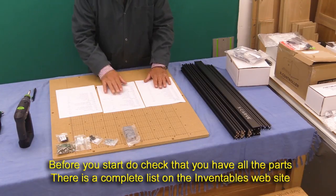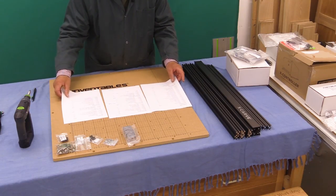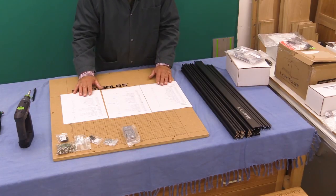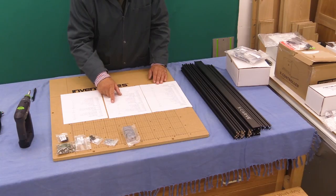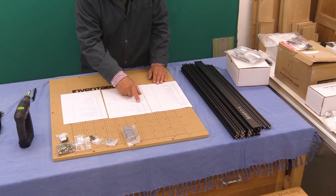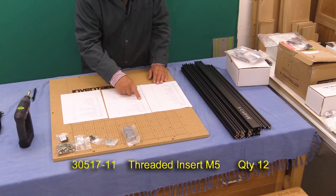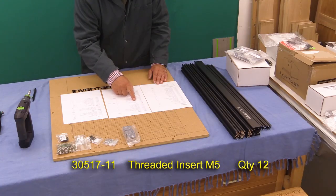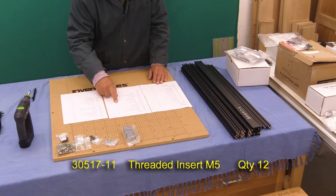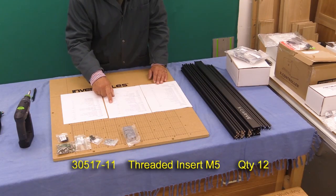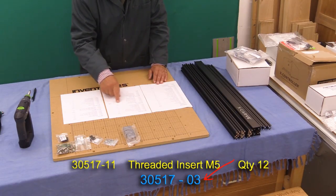Right, I've now checked all of the parts and printed off the relevant pages from the instructions for the 750 millimeter machine which I've got. The only issue I found was that with the 750 millimeter sideboard kit, there was an item number 30517-11 threaded insert M5. Well, there should be 12 of them. I think it's just the wrong part number has been quoted because I've got a 30517-03 which is exactly the same item.